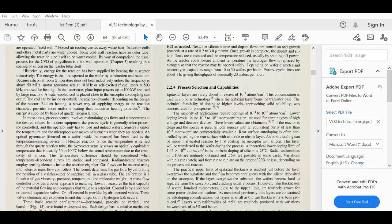Gas flows can be metered using rotameters or mass flow controllers. The former determine the gas flow by calibrating the position of a stainless steel or sapphire ball in a glass tube. The calibration is a function of gas viscosity, pressure, temperature, and molecular weight.